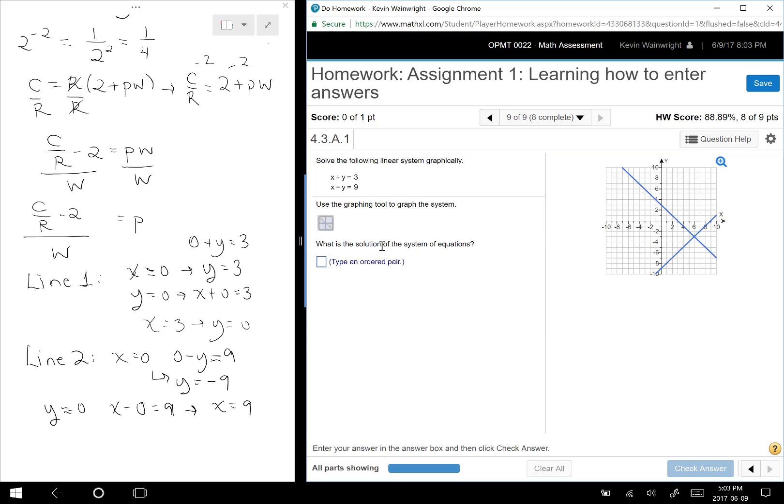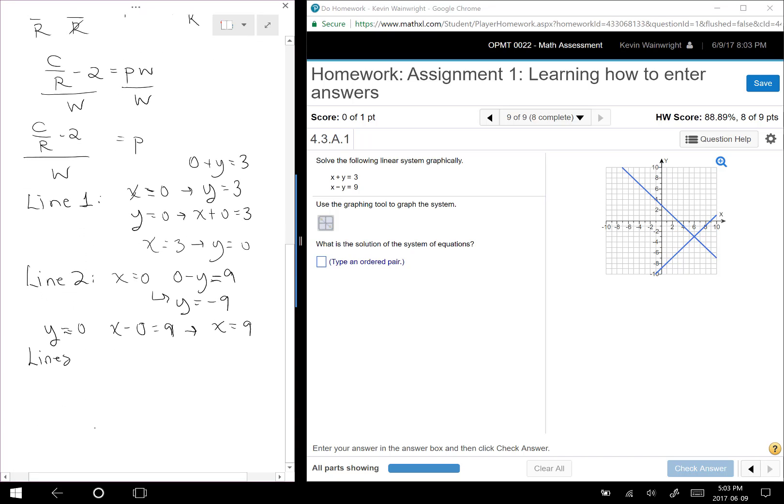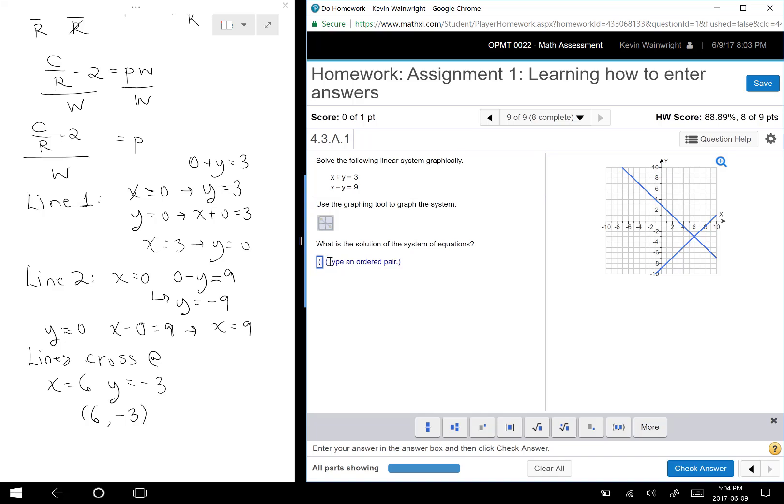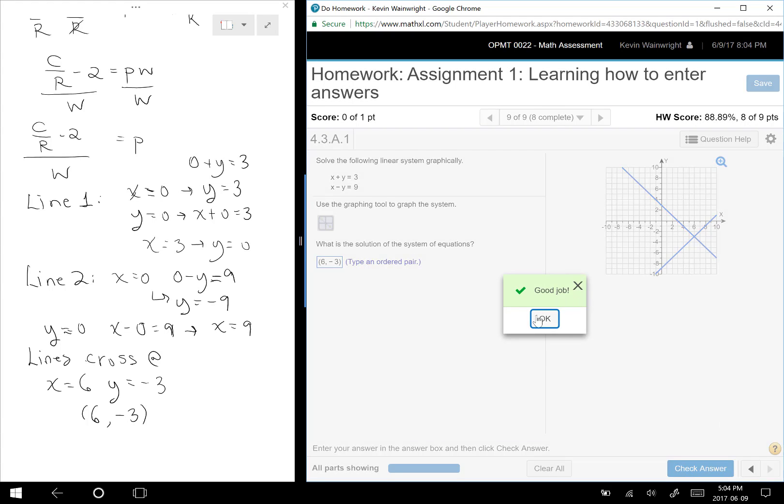Now it asks you, what is the solution? So type an ordered pair. How do we do that? So you'll see where they intersect here is at x equals to six and y equals to minus three. So the lines cross at x equals to six, y equals to minus three. Now, how do we write that as a pair? We write the six first and then the minus three. And so we type it this way, six comma minus three, and then check the answer. Very good. Good job.